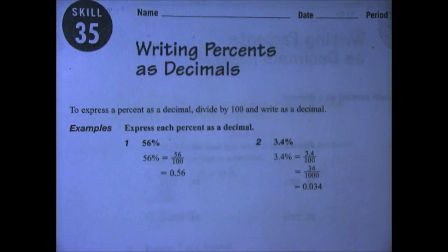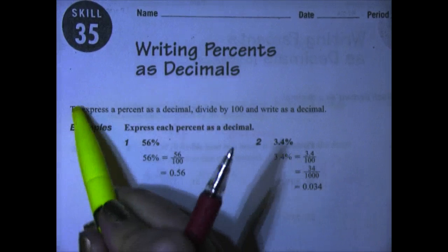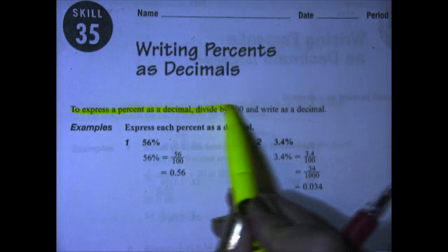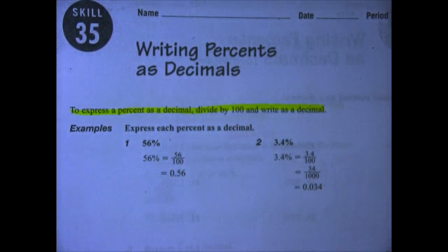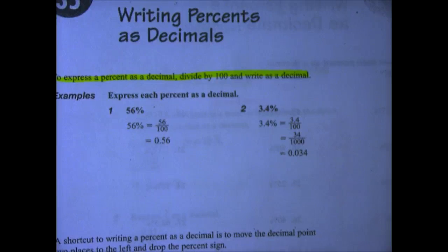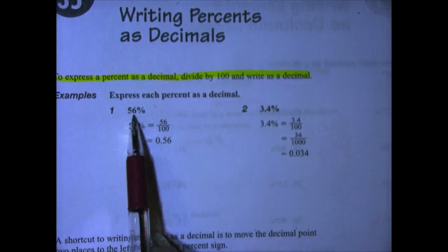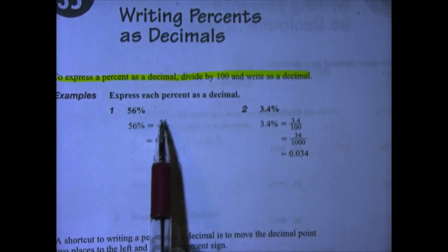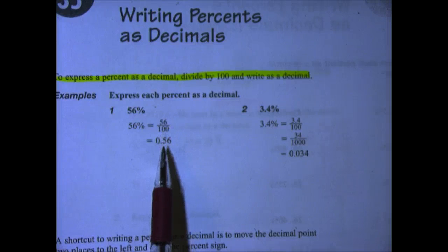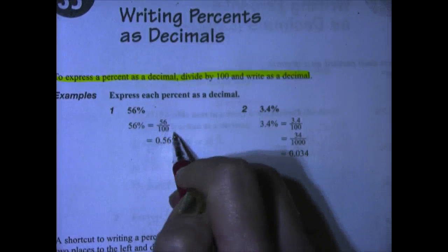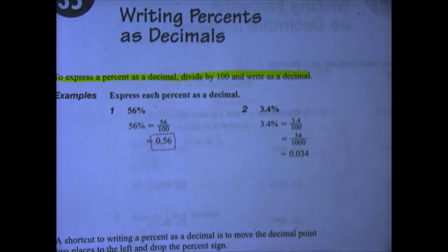In order to express a percent as a decimal, we're going to divide by 100 and write as a decimal. First I'm going to show you how it actually works, and then we'll look at the shortcut. In example 1, we're going to take 56%, write it over 100, and then change it to a decimal by division, and you get 0.56.